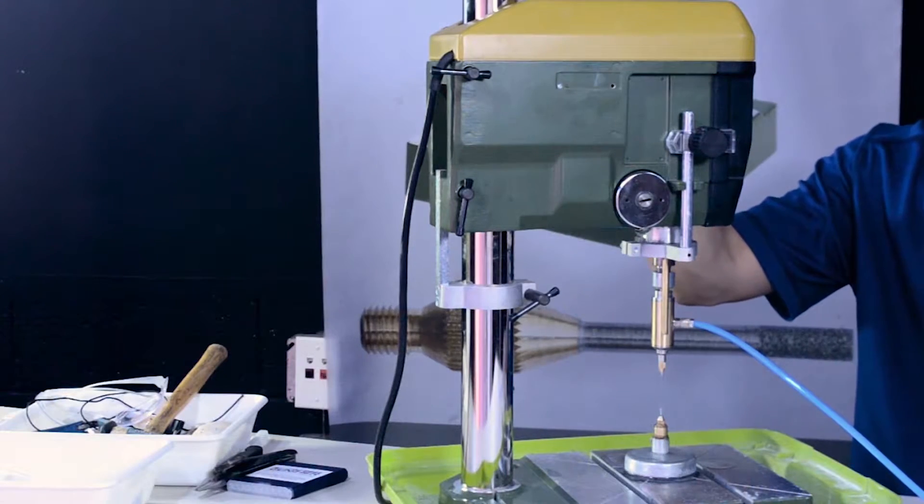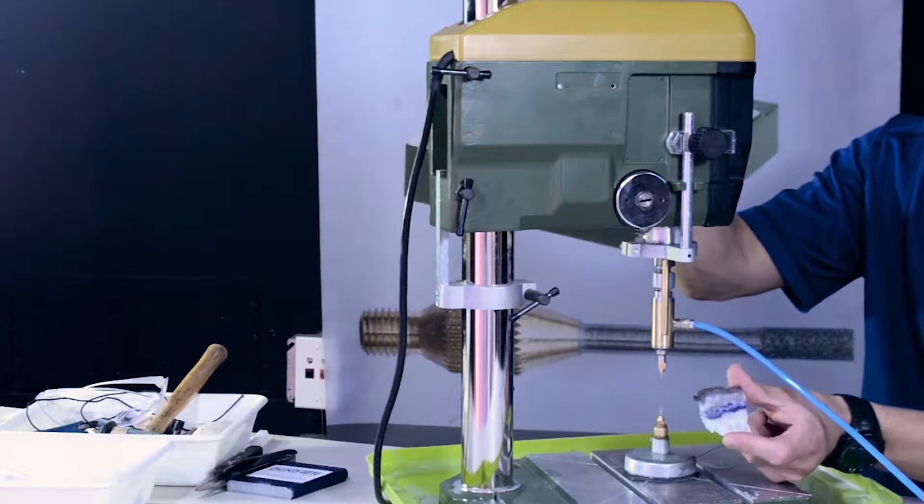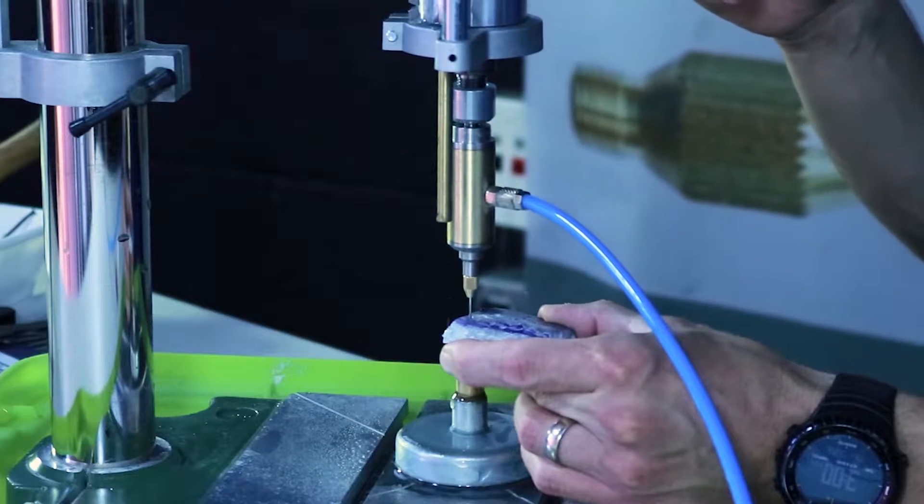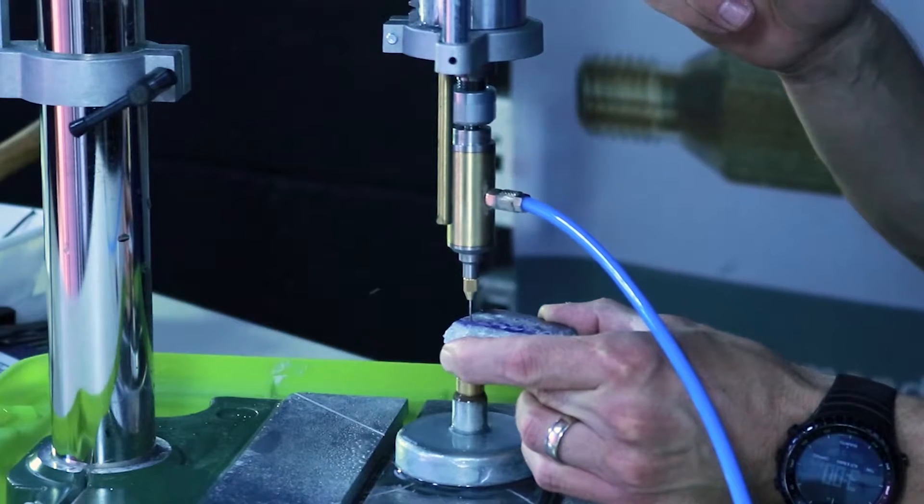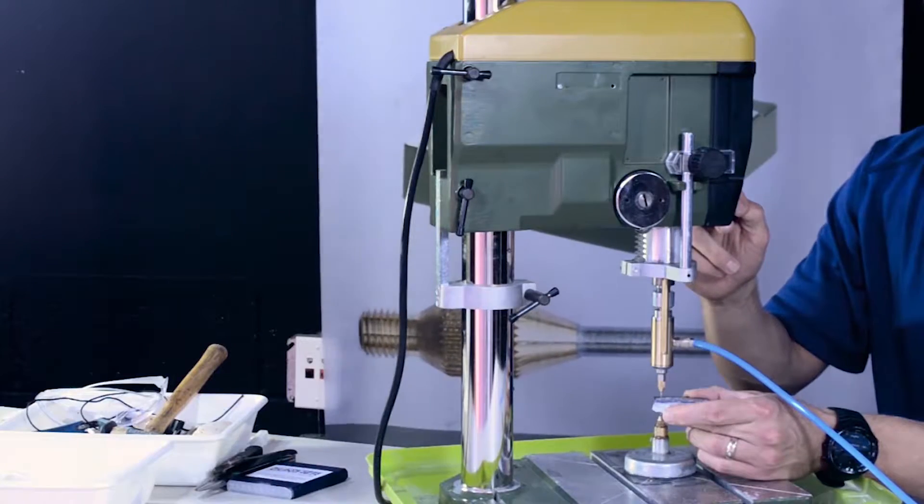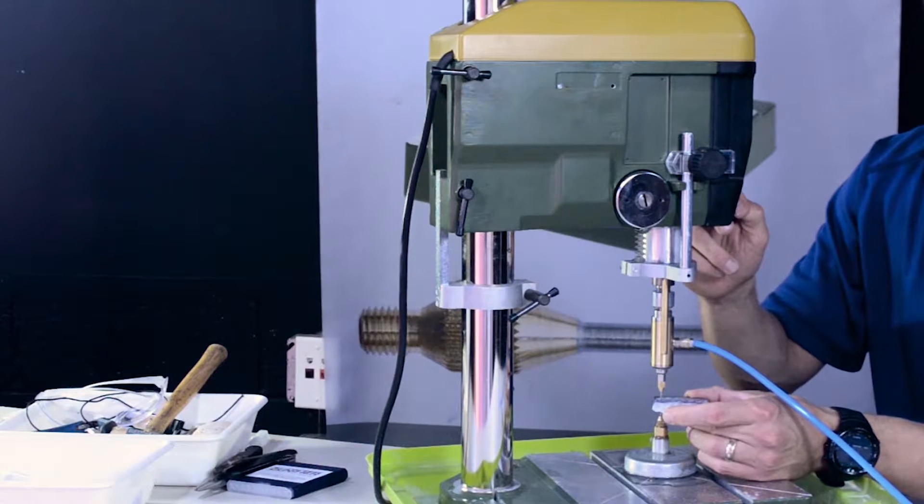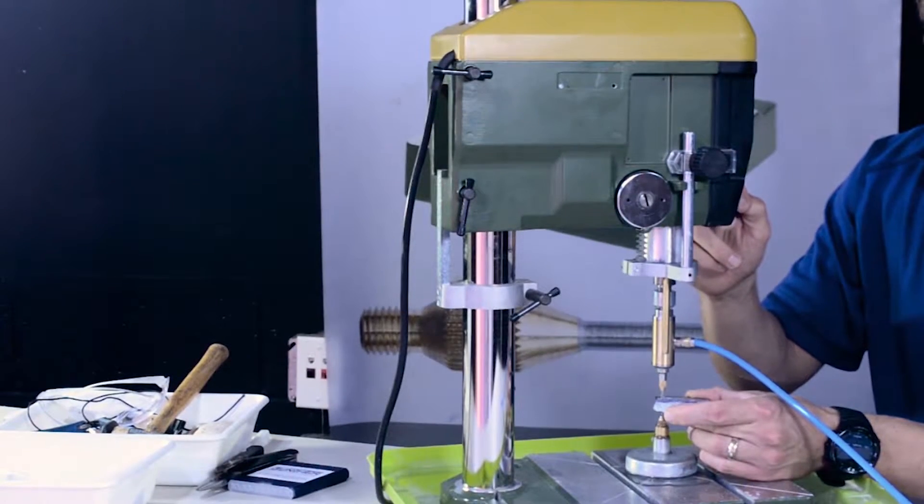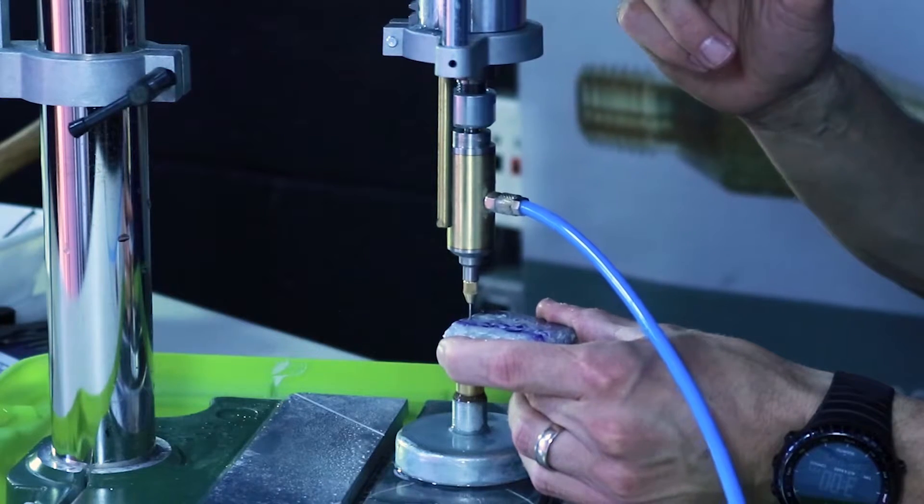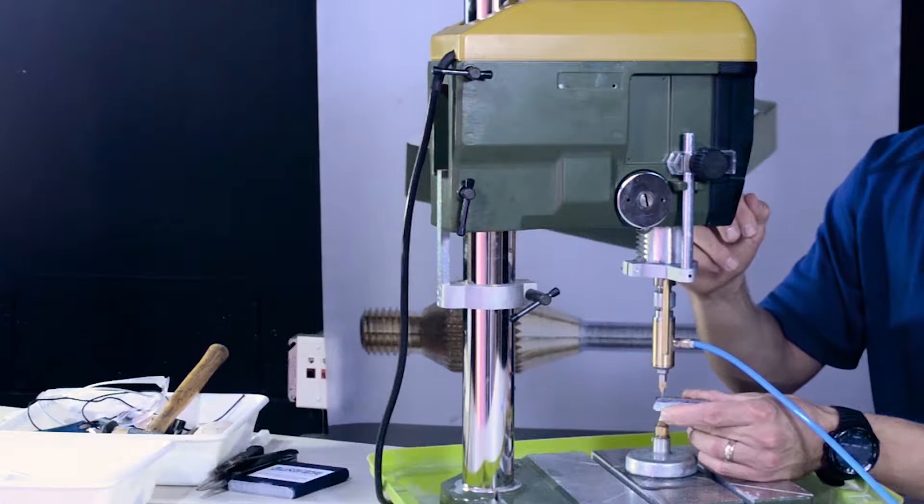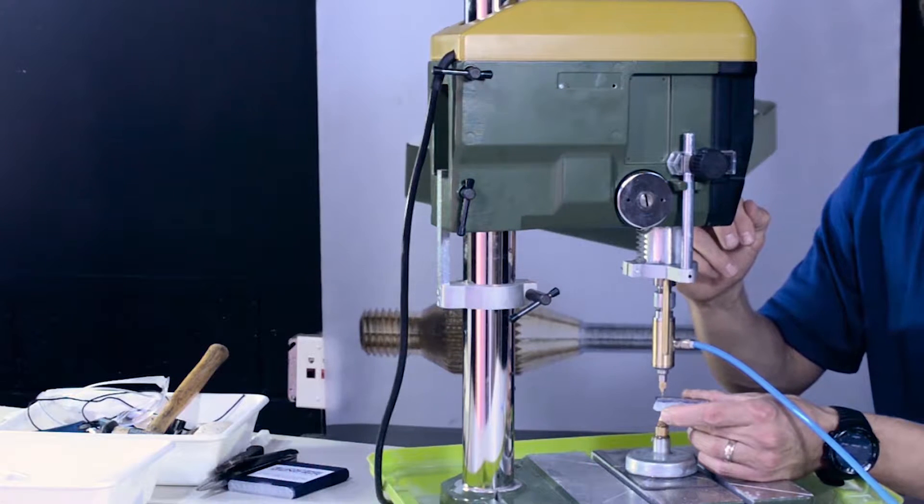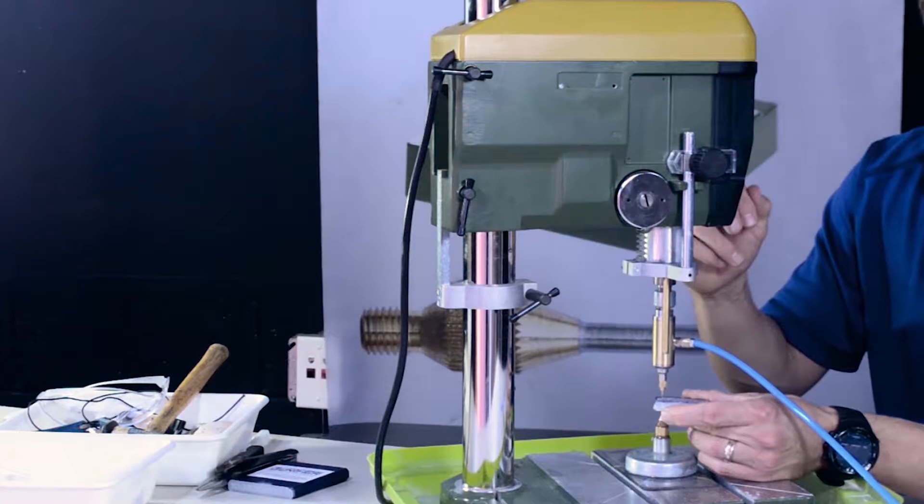Alright, so we'll start with this piece of agate or something. Now the key to drilling with one millimeter drill bit is keeping your stone level. If I were to tweak my stone up or down, it's going to bend my drill bit and break the drill bit.